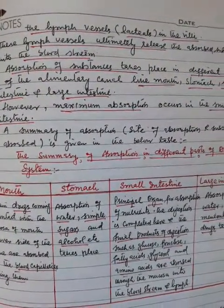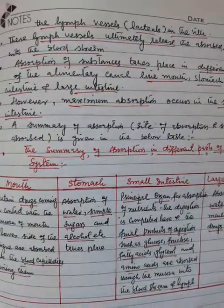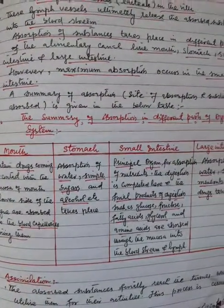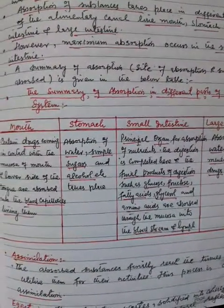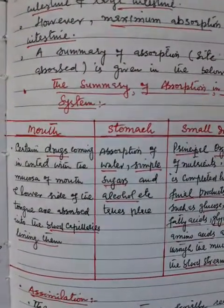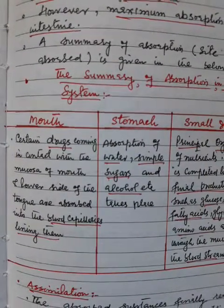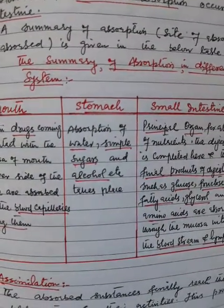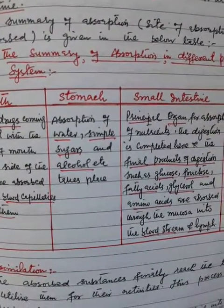A summary of absorption, including the site of absorption and substances absorbed, is given in the table below. In the mouth, certain drugs coming in contact with the mucosa of the mouth and the lower side of the tongue are absorbed into the blood capillaries lining them. In the stomach, absorption of water, simple sugars, and alcohol takes place.